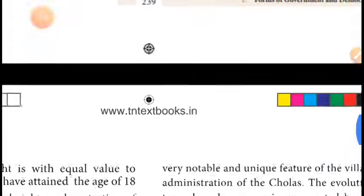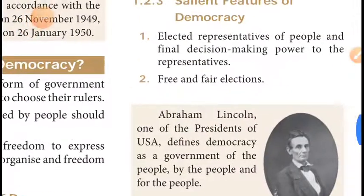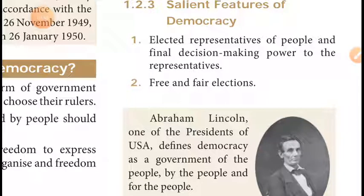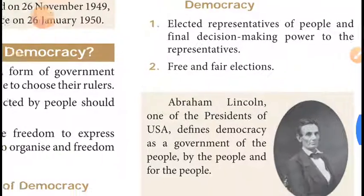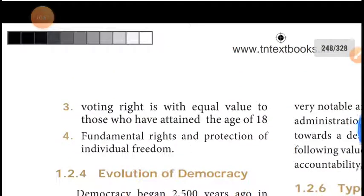To summarize the salient features: first, the people elect representatives who take final decisions; second, people can participate in free and fair elections without disturbance; third, if you have completed 18 years you have the right to vote for a representative; and fourth, in democracy there are six fundamental rights and individual freedom is protected.